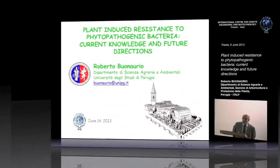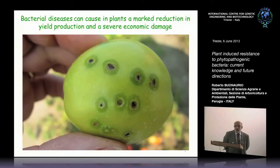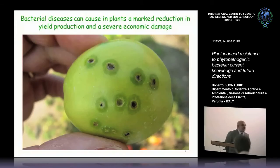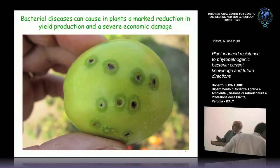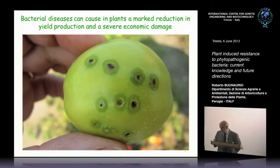Bacterial disease can cause in plants a marked reduction in yield production and severe economic damage. You can see a picture on the fruit of tomato found in Pianura Padana, showing severe bacterial spot disease caused by Xanthomonas euvesicatoria. It's a very dangerous disease.